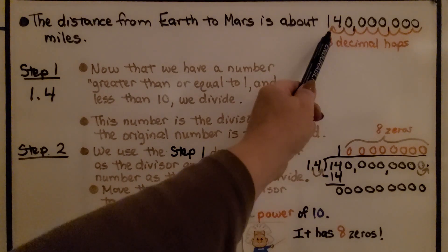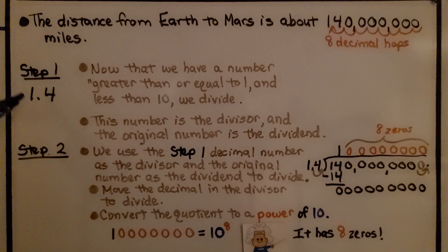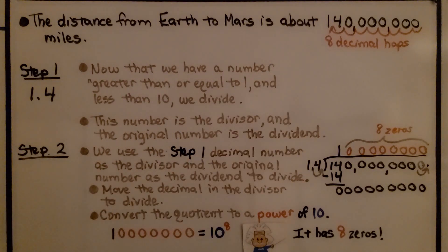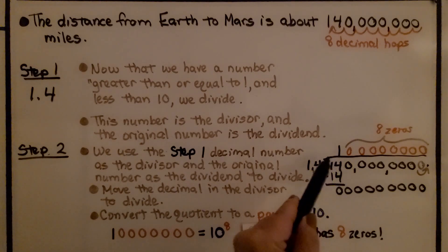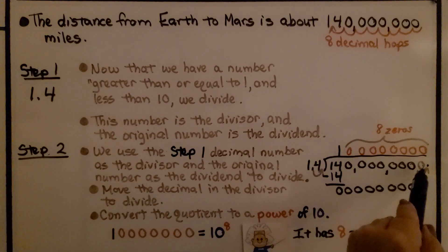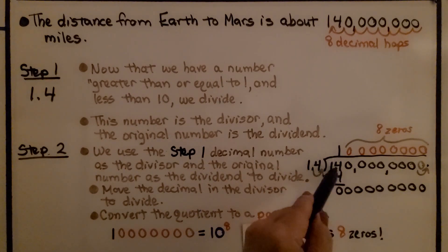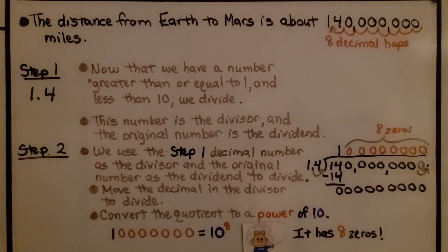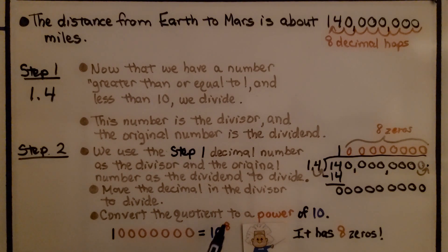We used 8 decimal hops to get our decimal point between the 1 and the 4. We have 1.4. Now that we have a number greater than or equal to 1 and less than 10, we divide — this number is the divisor and the original number is the dividend. We do 140 million divided by 1.4. We move the decimal point over in long division so it's a whole number as the divisor, which means we move it over in the dividend too. 14 fits into 14 one time. We get a zero, so the rest of the quotient is zeros — we're going to have 8 zeros. We use this step-1 decimal number as the divisor and the original number as the dividend. We convert the quotient to a power of 10: a 1 followed by 8 zeros is 10 to the 8th power.